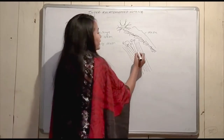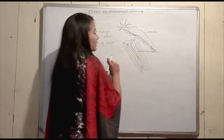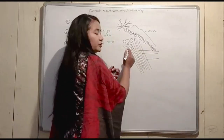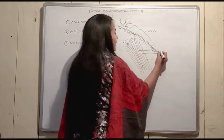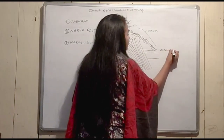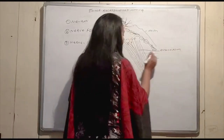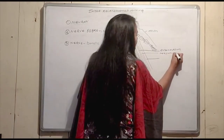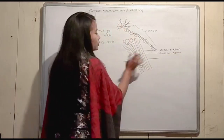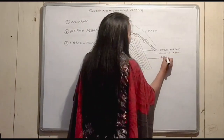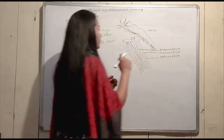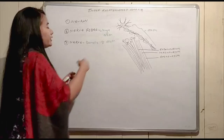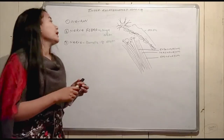A nerve has three layers. The inner layer is the endoneurium. There is also a middle layer and an outermost layer. The endoneurium is one of the layers covering the nerve.